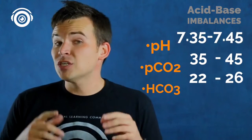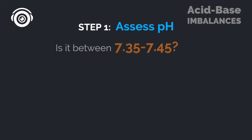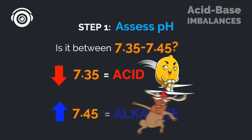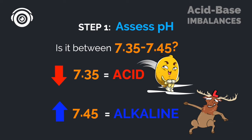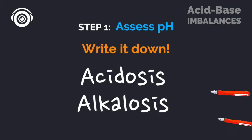Now let's talk about an actual acid-base problem. First, look at the pH and ask: is it within 7.35 to 7.45? If the lab value is below 7.35, that's an acid. If the number is above 7.45, that's basic or alkaline. If pH is below 7.35 and trending downward, write down acidosis. If it's above 7.45, write down alkalosis. You've already got 50% of the problem right there.